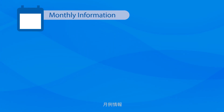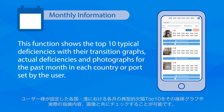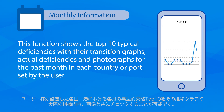Monthly Information. This function shows the top 10 typical deficiencies with their transition graphs, actual deficiencies, and photographs for the past month in each country or port set by the user.